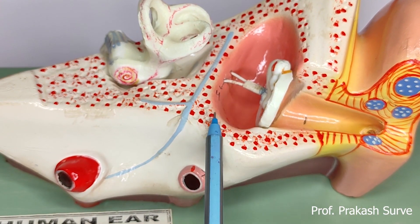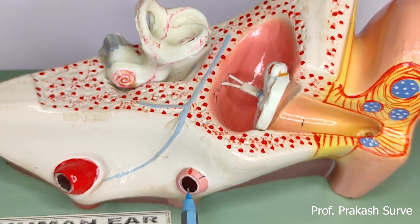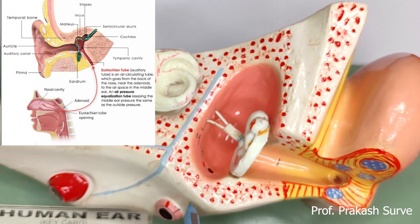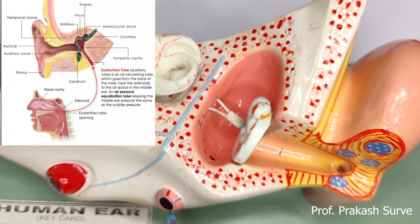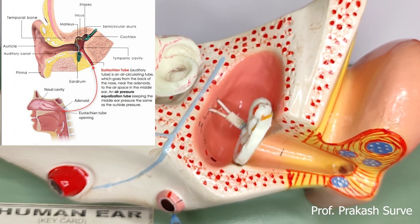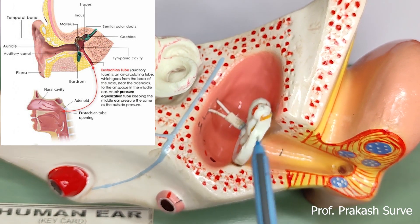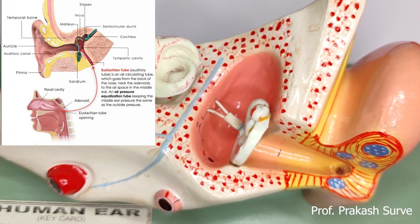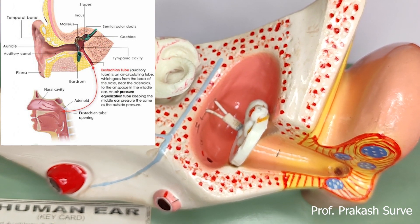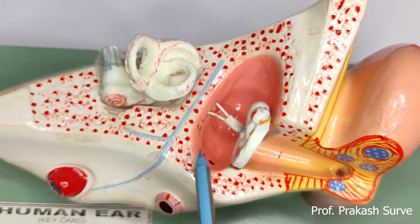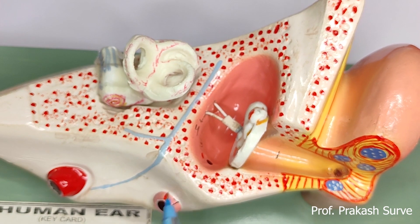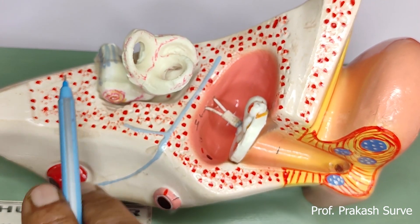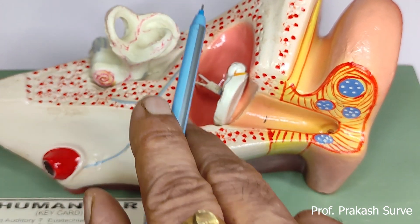The short Eustachian tube connects the middle ear to the pharynx. It equalizes the air pressure on both sides of the eardrum, maintaining the air pressure.